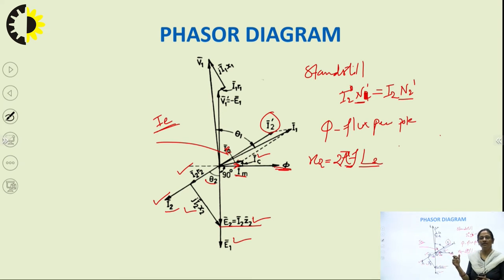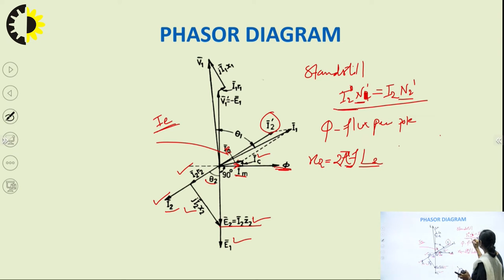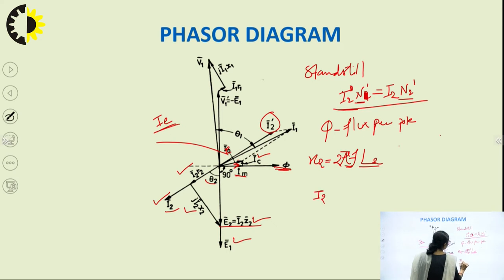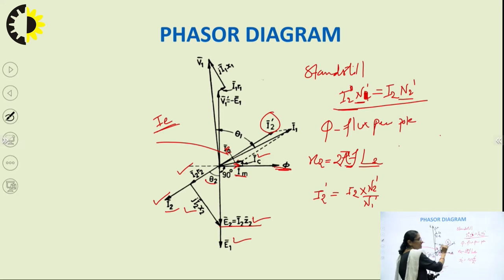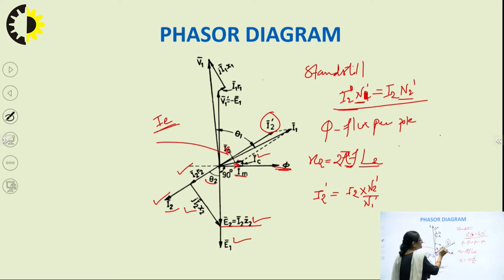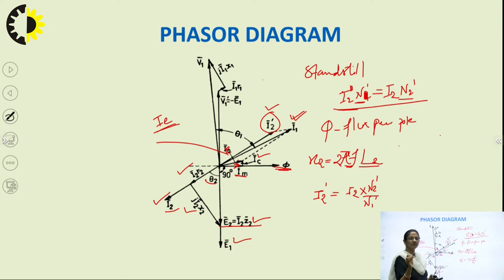To counterbalance the demagnetizing effect of rotor current I2, the stator draws a component of current I2-dash such that I2-dash × N1-dash = I2 × N2-dash, where N1-dash and N2-dash are the effective number of turns in stator and rotor. The magnitude of I2-dash equals I2 × N2-dash / N1-dash. I2-dash is drawn opposite to the phasor of I2. The phasor sum of exciting current IE and I2-dash gives the stator current I1.